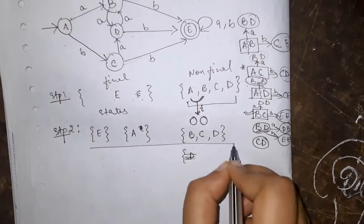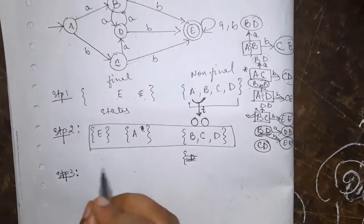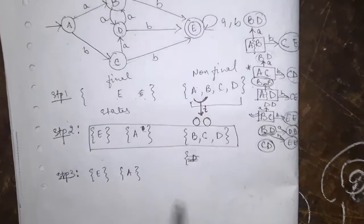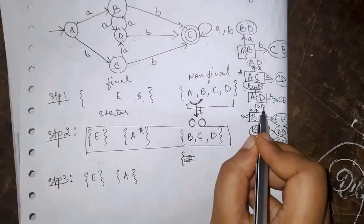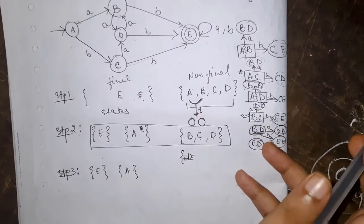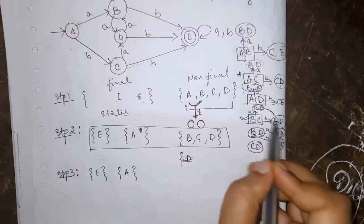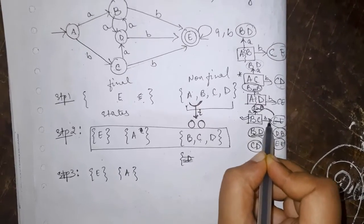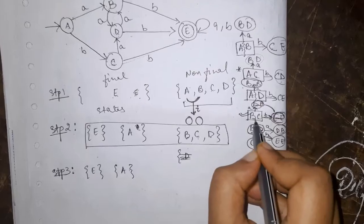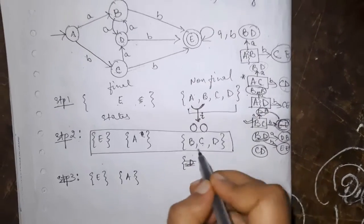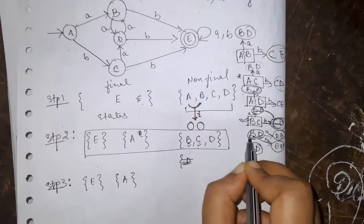Now this is the new partition that we are having. Again in step 3 we will repeat the same as step 2. E and A are two different partitions for B C D. Now B C it goes to E E and D D. This both are in same group. Maybe these two are different groups. But for same transition input these are going to same group. Therefore B C will remain in the same group. B C will remain. Now C D will remain.